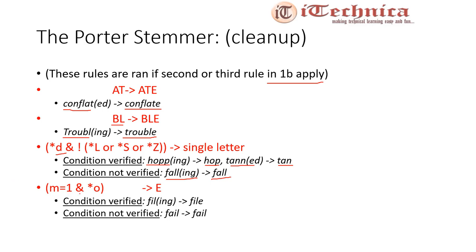The fourth cleanup condition: if m equals one and the stem ends in cvc (*o) where the second consonant is not w, x, or y, then append e. For example, filing reduces to fil — m equals one with one VC combination — and the cvc condition applies, so it becomes file. If the stem ends in vowel-vowel-consonant (not cvc), the condition is not met and the word remains unchanged, as with fail.